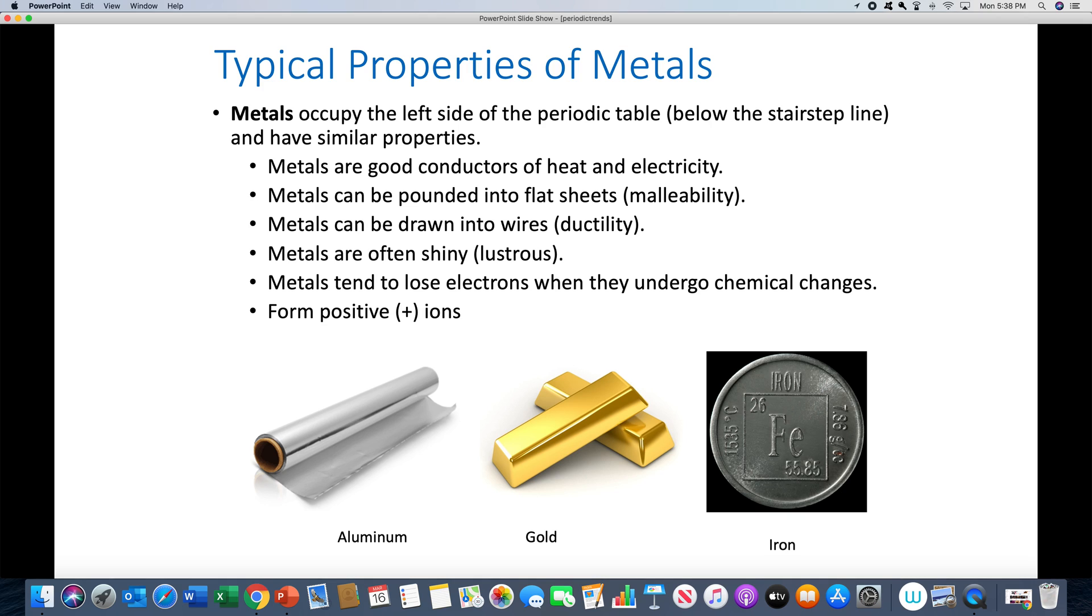Most importantly in terms of reactivity, metals tend to lose electrons. And if you look at their electron configurations and the valences, you can see why. They also tend to form positive ions, which of course makes sense - lose electrons, form positive ions.